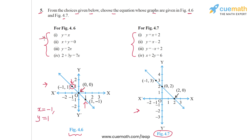From these four equations, we need to see which one is satisfied by minus 1 comma 1. Clearly the first one is not, because the first one is y equal to x, but y is not equal to x here, so we can rule this out. The second one is x plus y equal to 0, and yes, x plus y gives minus 1 plus 1 which is equal to 0. So the second equation is satisfied by this solution. The third one is y equal to 2x, which is also not satisfied by this pair of values, so we can rule this out.